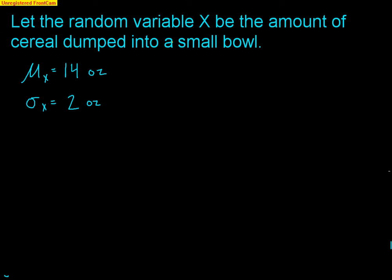Now let's talk about a continuous random variable. Let X be the amount of cereal dumped into a small bowl. Since you could dump 8.923467 ounces or any decimal value, there's an infinite number of possibilities. The expected value is 14 ounces with a standard deviation of 2 ounces.